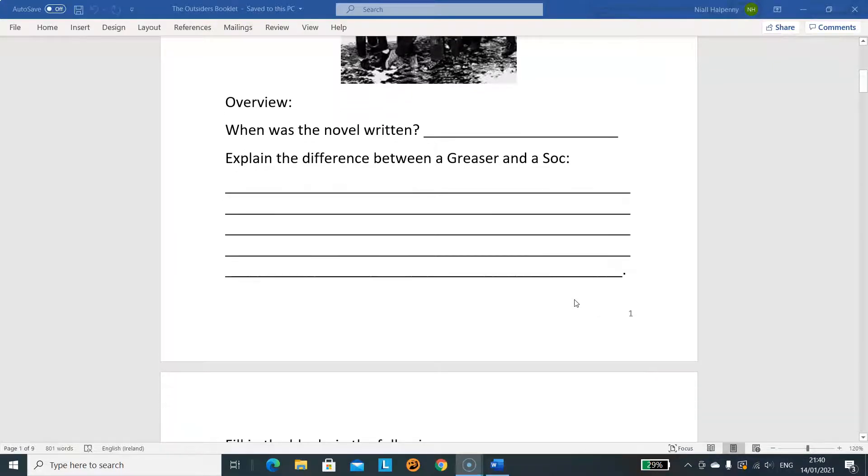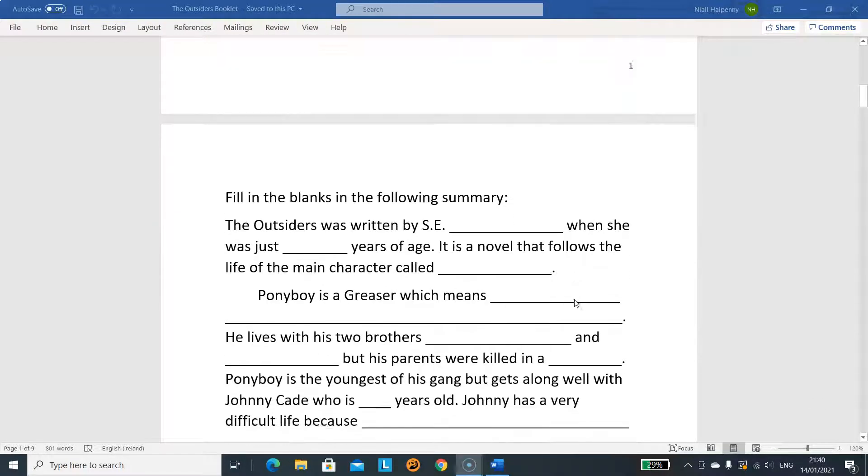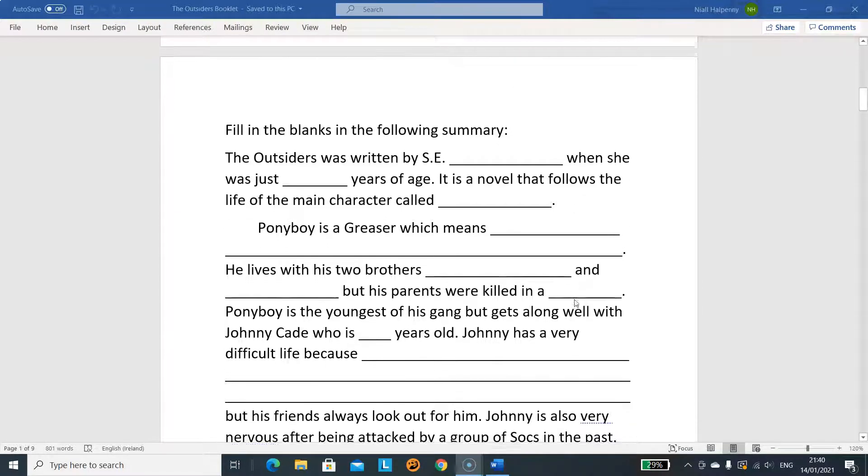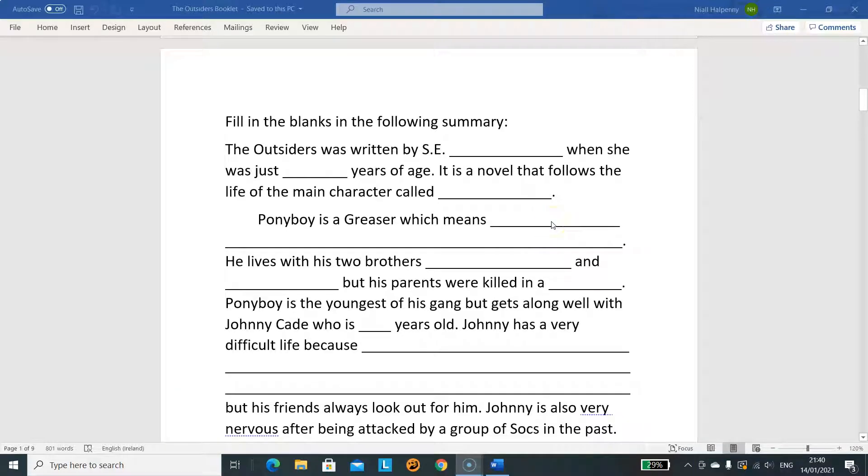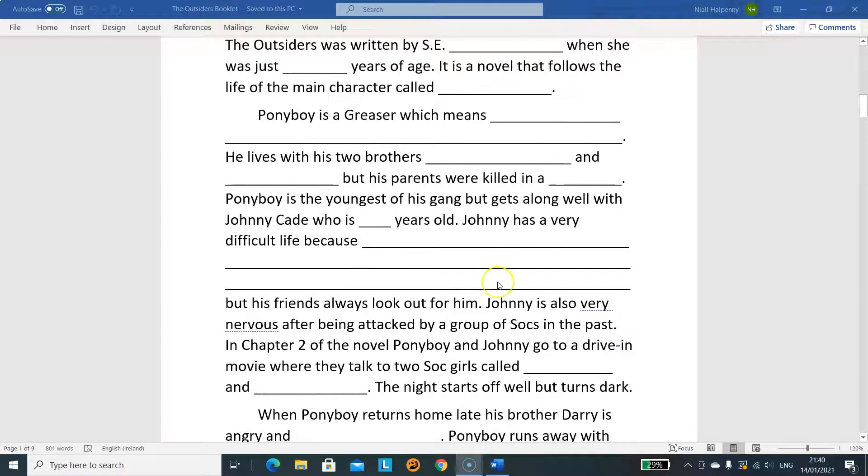Make sure you're going back through the novel and finding a place where they describe what a greaser is and describe what a soc is. You'll find it towards the start of the novel. The first main exercise is a simple fill-in-the-blanks in this summary: The Outsiders written by S.E. Hinton when she was just blank years of age. Just fill in the blanks, it's fairly straightforward. Just be aware that where I've left a line and a half, two and a half lines, that's because I'm looking for a bit of detail there.